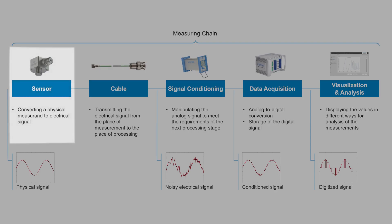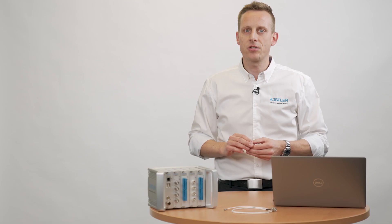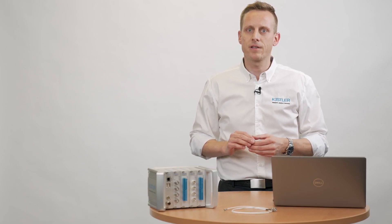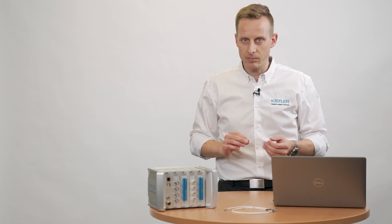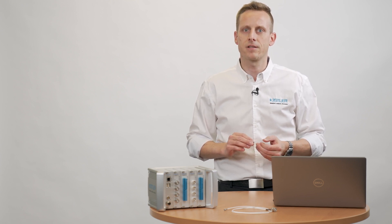Let's start with an overview of the full measuring chain. The sensor converts the physical signal into an electrical signal — for example a force, pressure, or like this one, acceleration. The cable looks like a no-brainer and is often underestimated, but depending on the application it may have a crucial influence on the measurement. Good cabling helps a lot to reduce noise and interfering signals.